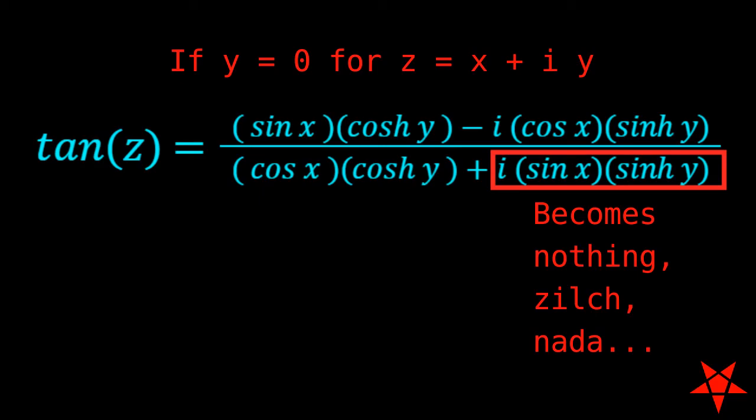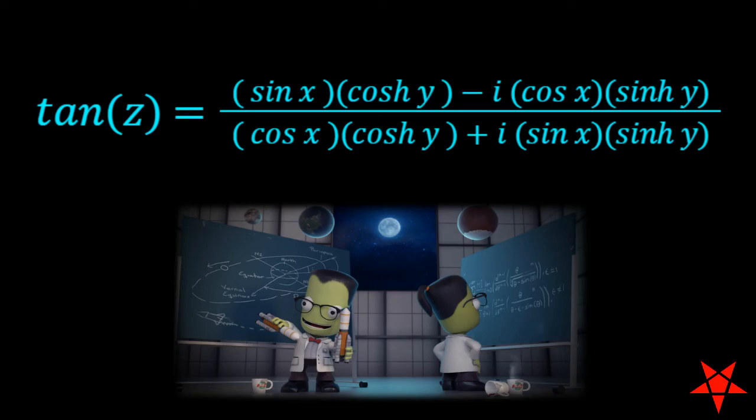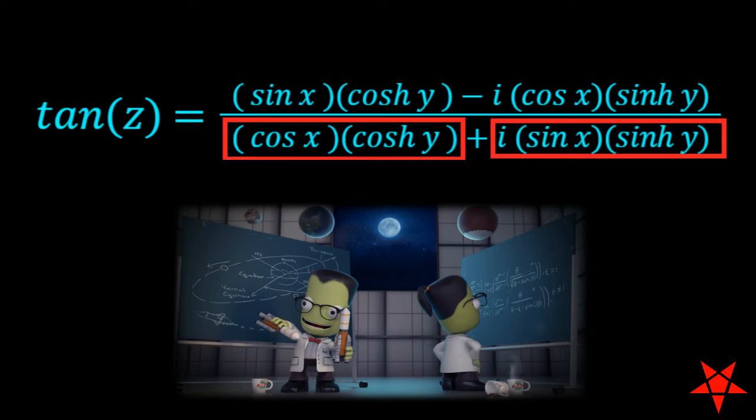It momentarily occurred to me to look for places in the complex plane where the first term and the second term in the denominator cancel each other. But then I realized that would be impossible because the first is real and the second is imaginary.